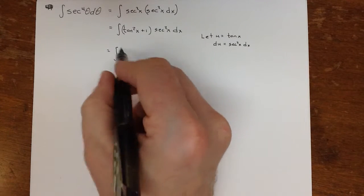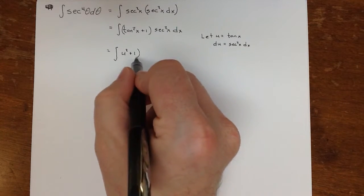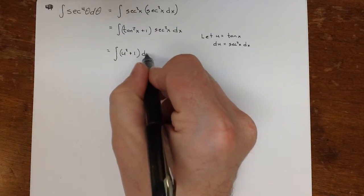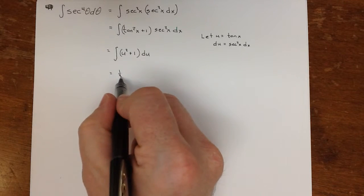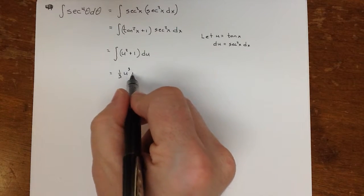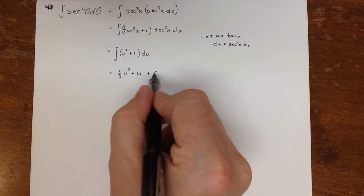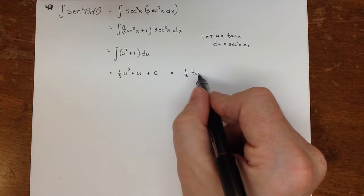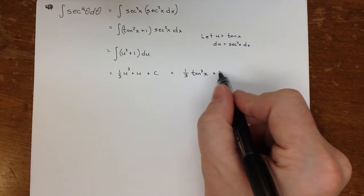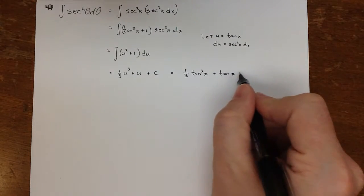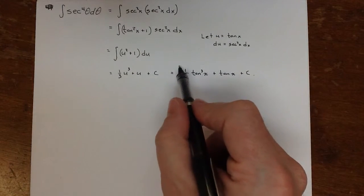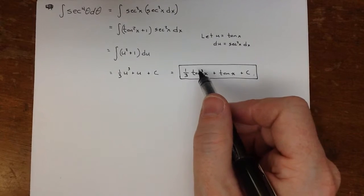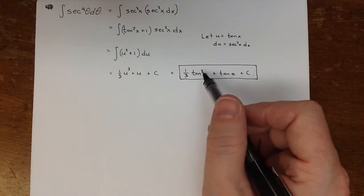So I can rewrite this now as u squared plus 1. And then this is just du. And I get 1/3 u cubed plus u plus c. And when I substitute back, I get 1/3 of tan cubed x plus tan x plus c. That's the answer I get. I think that's the nicest looking answer.